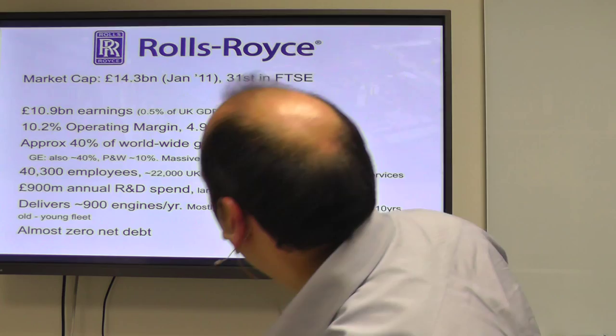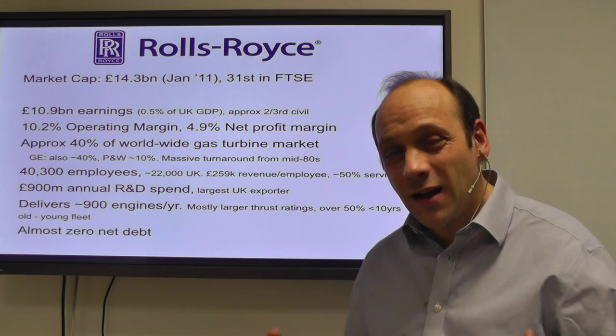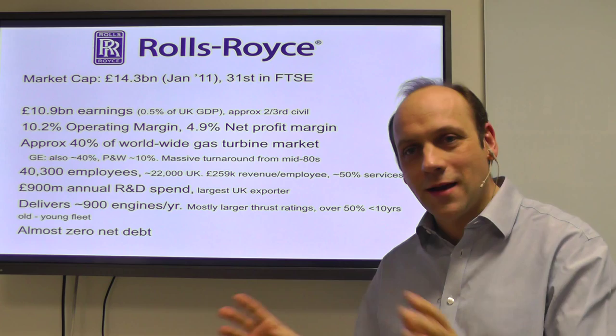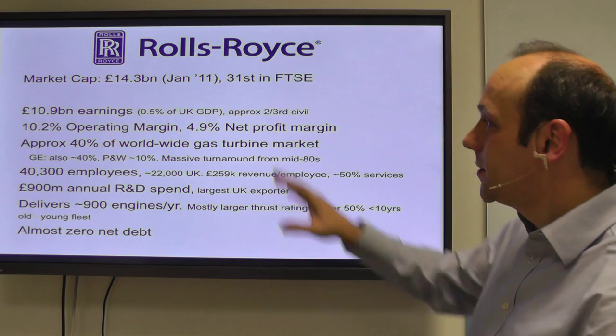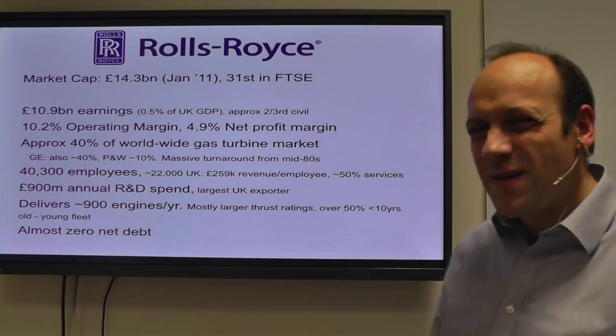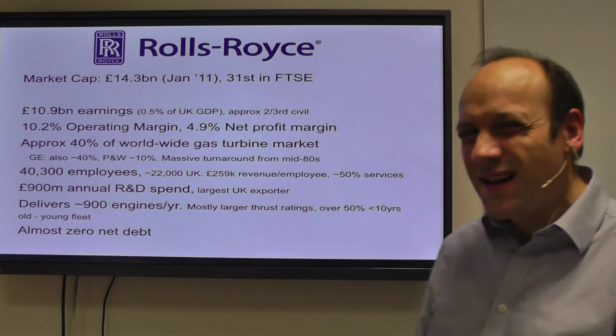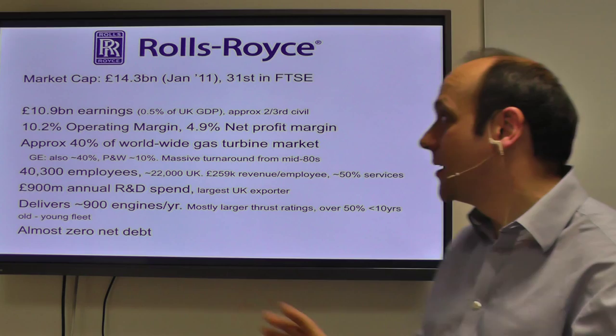Why do we do this? Thinking about Rolls-Royce: they are the UK's largest export business, including all the invisibles, any invisible earnings from banks and so on. They are a big company. These are 2011 figures for the 2010 year. They have a market cap of some tens of billions, something like 15 billion. They're in the middle of the FTSE 100 index. They have about 11 billion in earnings a year, which is about half a percent of UK GDP — one in 200 pounds of productivity in the UK comes from this company.